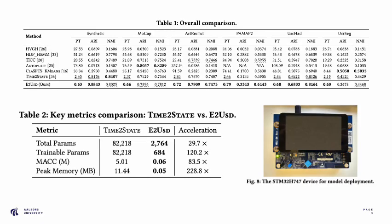In experiments, E2USD achieved the best accuracy while using only 4% of the total and 1% of the trainable parameters when compared to the SODA method. We also achieved the lowest processing time among all competitors.